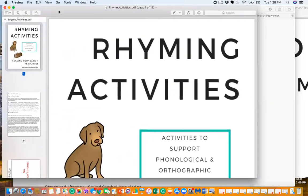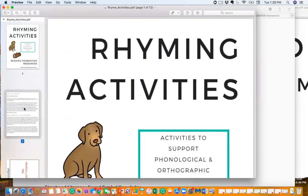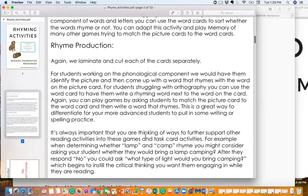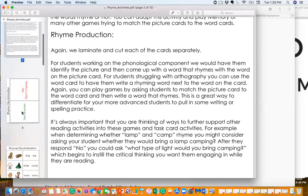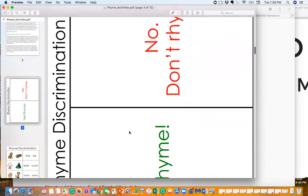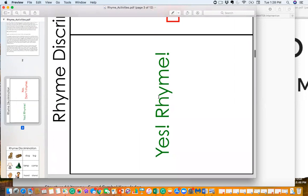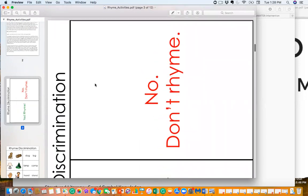The first one here is going to be rhyming activities. We do have a how to use it, what to do with it, how to prepare it, sheet of directions here for you. And then this first one you're going to come across is for rhyme discrimination. This is just where you're talking to a student and you're going to give them two words and they have to determine yes those words rhyme or no those words don't rhyme.